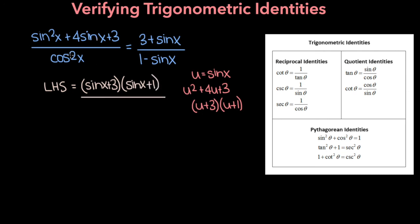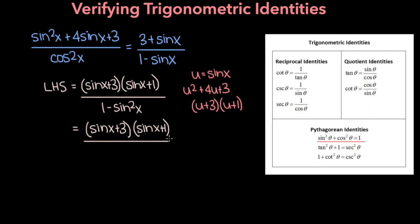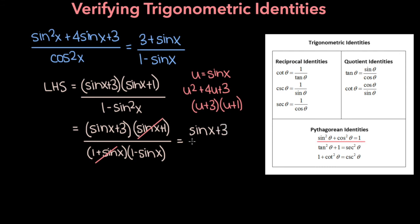Everything in the numerator is in terms of sine x, so let's get the denominator in terms of sine x as well. Using the identity, cosine squared x equals 1 minus sine squared x. So in the denominator we have 1 minus sine squared x. Let's factor the denominator: 1 minus sine squared x is a difference of two squares, so it factors into 1 plus sine x times 1 minus sine x. Notice that sine x plus 1 and 1 plus sine x cancel, and so we're left with sine x plus 3 over 1 minus sine x, which is the right-hand side of our equation.